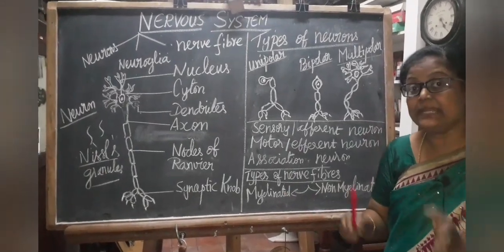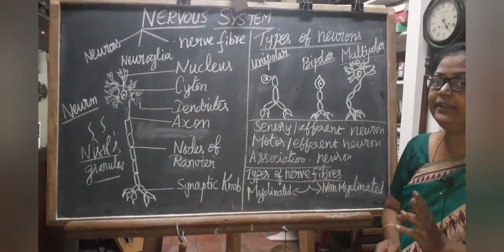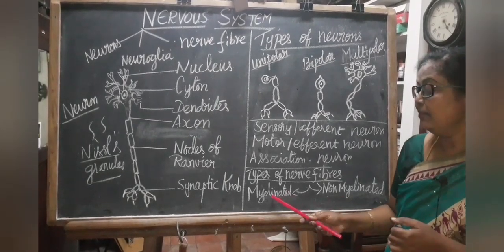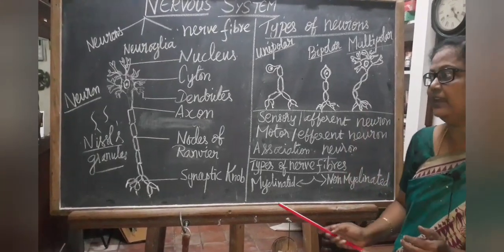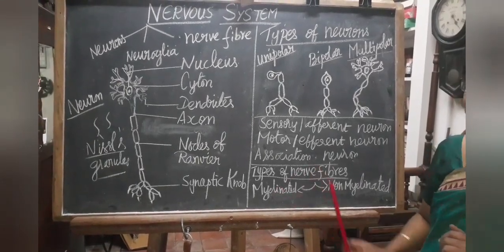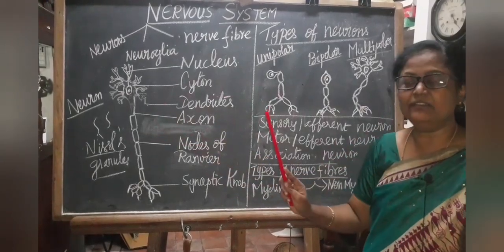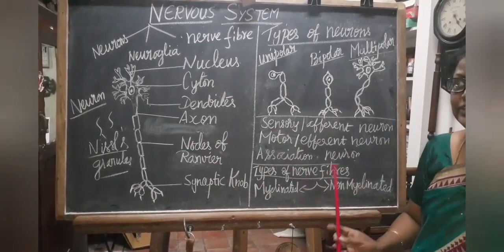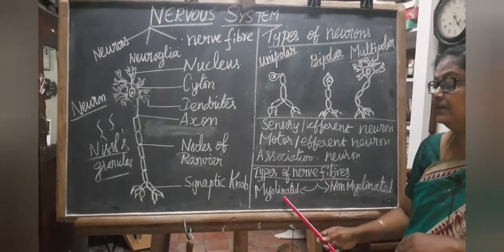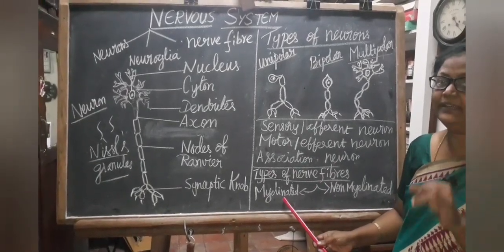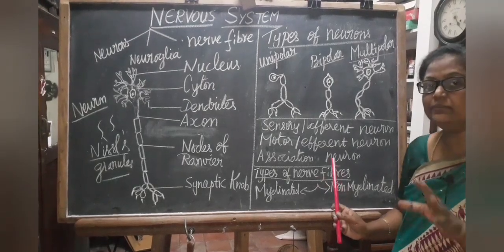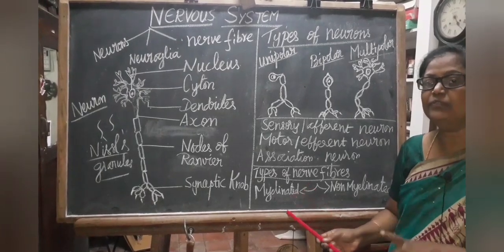According to the presence or absence of myelin sheath, nerve fibers are divided into two types: myelinated nerve fibers, where the axon is covered by a myelin sheath, and non-myelinated nerve fibers, where it is not. Both myelinated and non-myelinated nerve fibers form the white matter and gray matter of the brain.